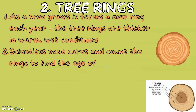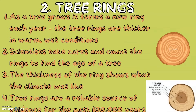Tree rings. As a tree grows, it forms a new ring each year. The tree rings are thicker in warm and wet conditions. Scientists take cores and count the rings to find the age of the tree, and the thickness of the ring tells scientists what the climate was like. Tree rings are a reliable source of evidence for the past 100,000 years.